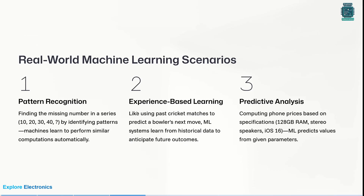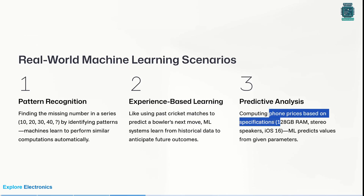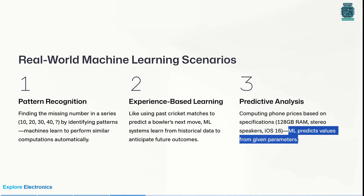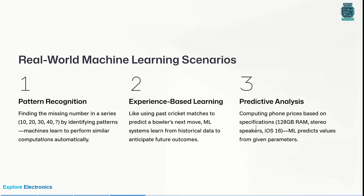Predictive analysis: let's say we need to compute phone prices based on specifications — which phone will cost how much depending on the brand and its computing ability. We consider RAM size, speaker quality, OS type (Android or iOS), and so on. Machine learning predicts values from given patterns. It learns from the historical data, then predicts the future by taking these things into consideration. These are the three real-world machine learning scenarios.